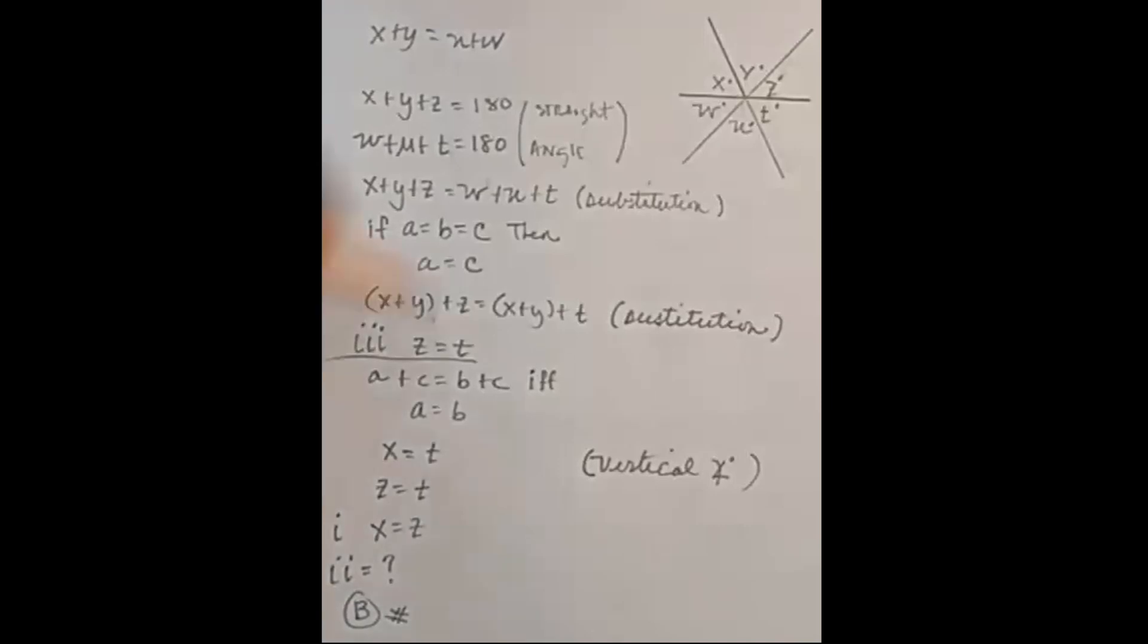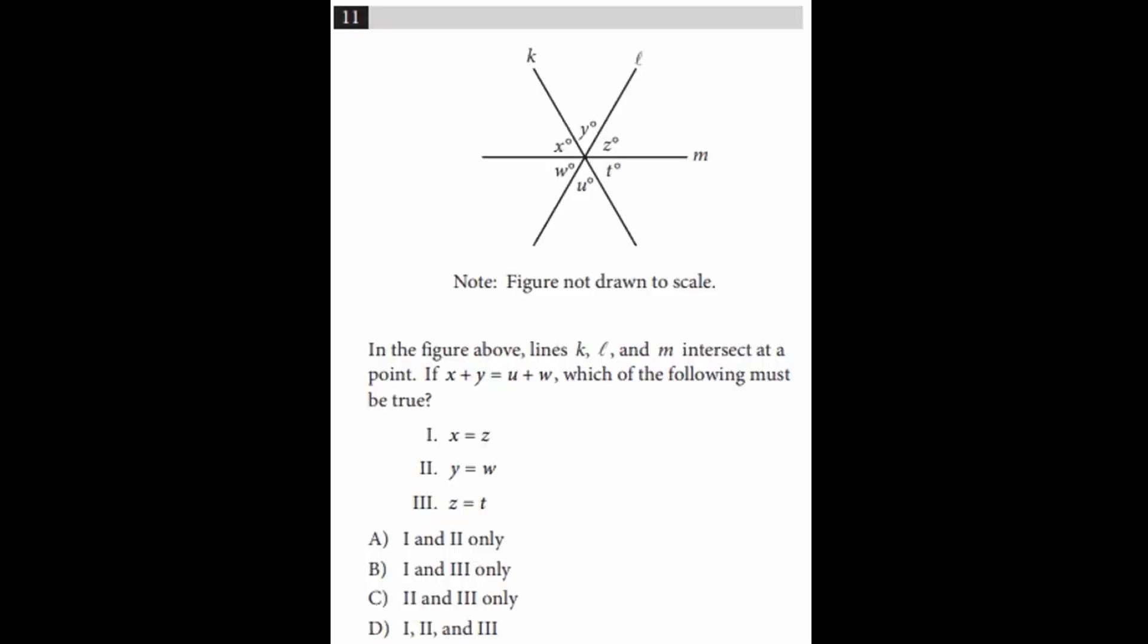X also equals T because vertical angles are congruent. Z must equal T by the transitive property. So we've shown one and three. Number two, Y equals W - there's no evidence of that. So the answer is B.